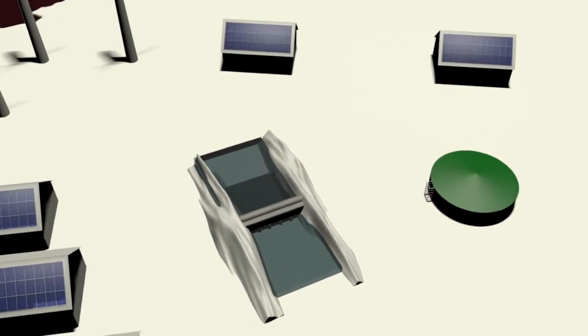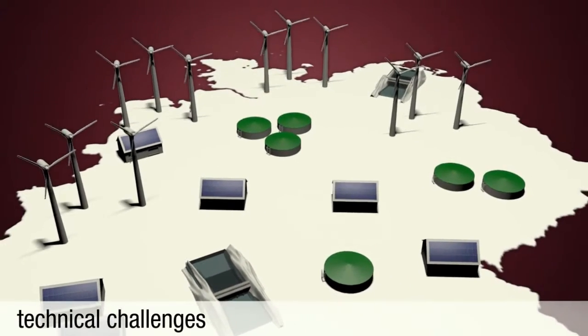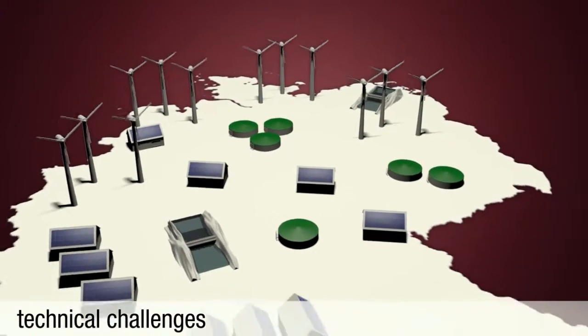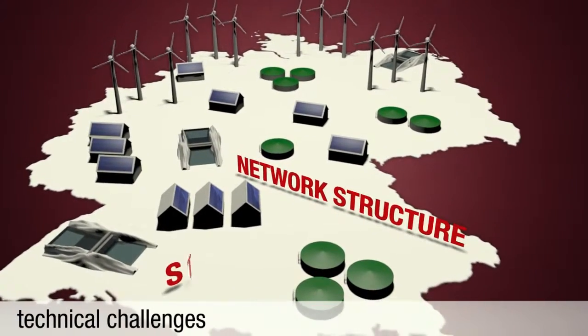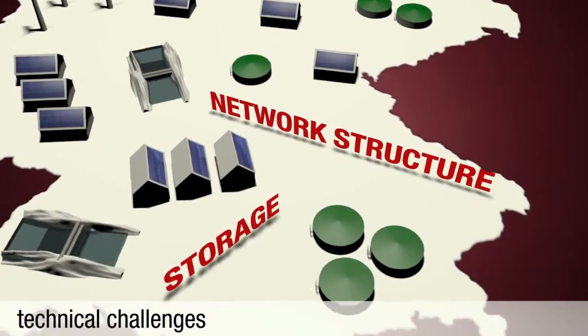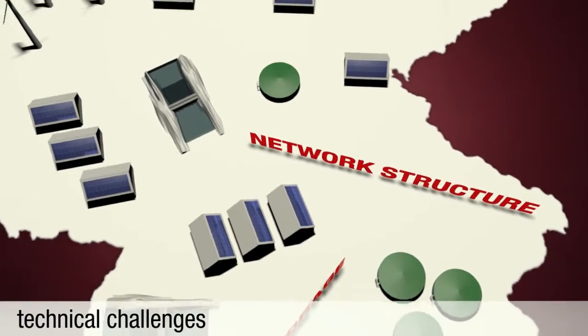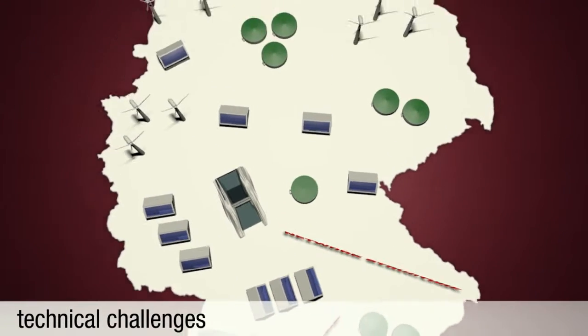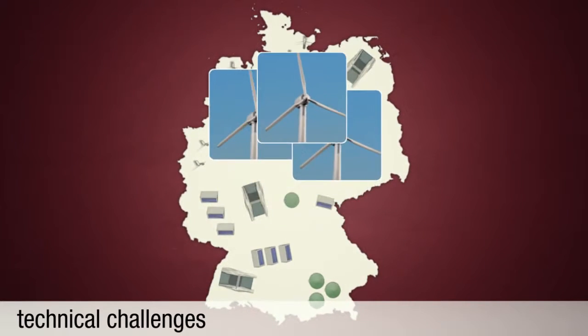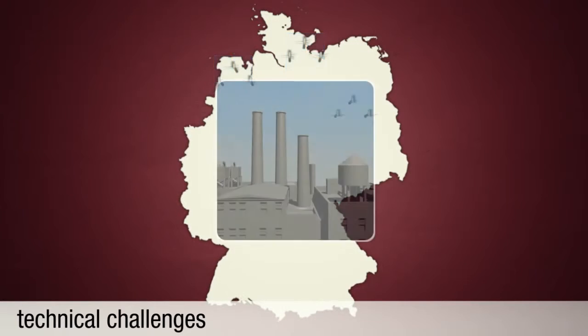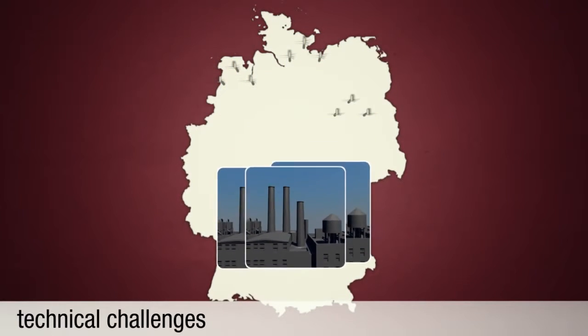The reliable and constant supply of green electricity is a major technical challenge. Two points are particularly challenging: the structure of power grids and the storage of power. In Germany, for example, energy production and consumption are located in different regions. The largest supplier of renewable electricity, wind power plants, are mostly located in the north due to good climate conditions. Much of the country's energy-intensive industry, however, is located in the south.